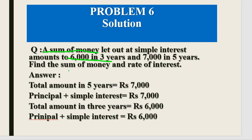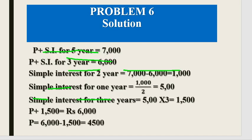We need to find the principal and the rate of interest. The total amount in 3 years is Rs. 6,000 and in 5 years is Rs. 7,000. Since the principal is the same in both cases, the difference of Rs. 1,000 is due to simple interest alone.